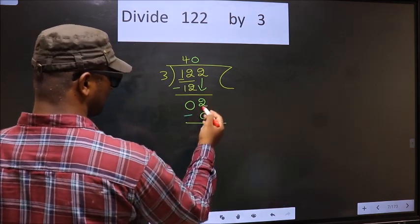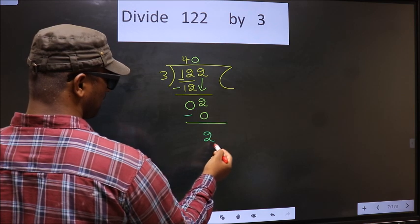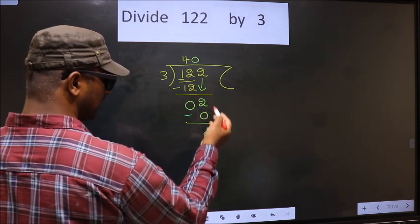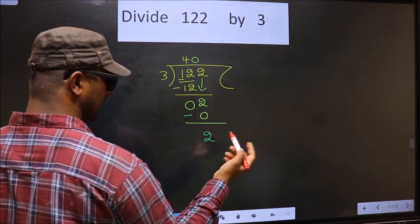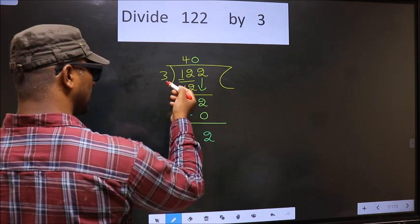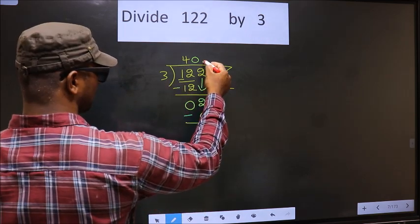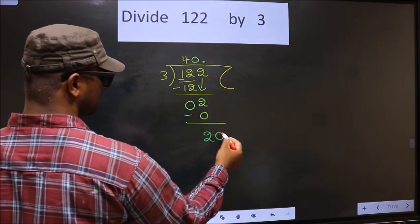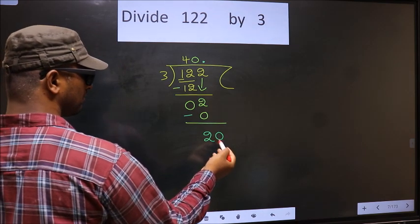Now you subtract. 2 minus 0, 2. Over here we did not bring any number down, and 2 is smaller than 3. So now you can put a dot and take 0. So here we have 20.